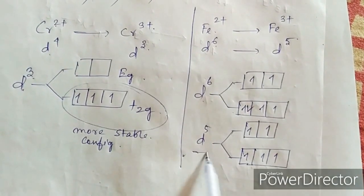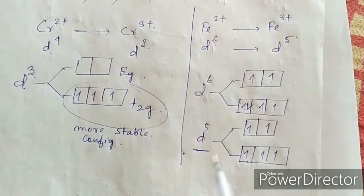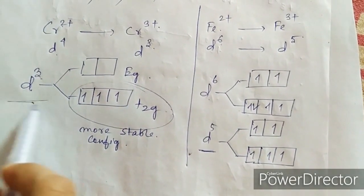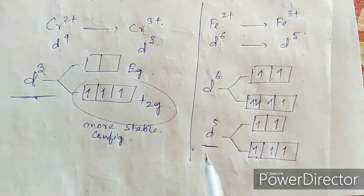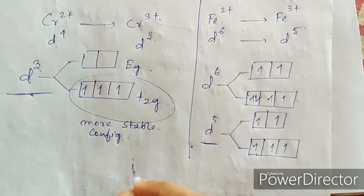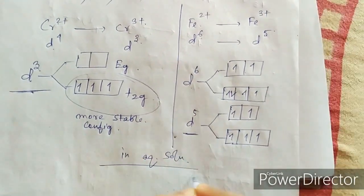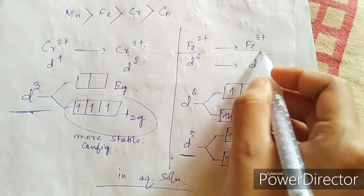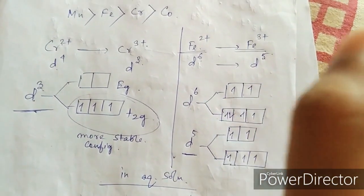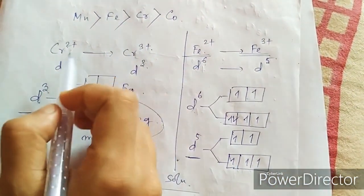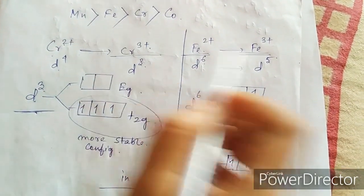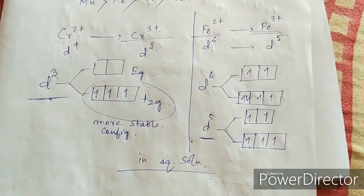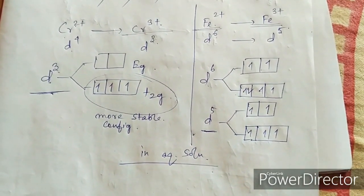That's why the D5 configuration is less stable compared to the D3 configuration — or you can say D3 is more stable than D5 in aqueous solution. So the tendency of iron 2+ to form iron 3+ is less compared to the tendency of chromium 2+ to form chromium 3+. That's why chromium 2+ is a stronger reducing agent than iron 2+.